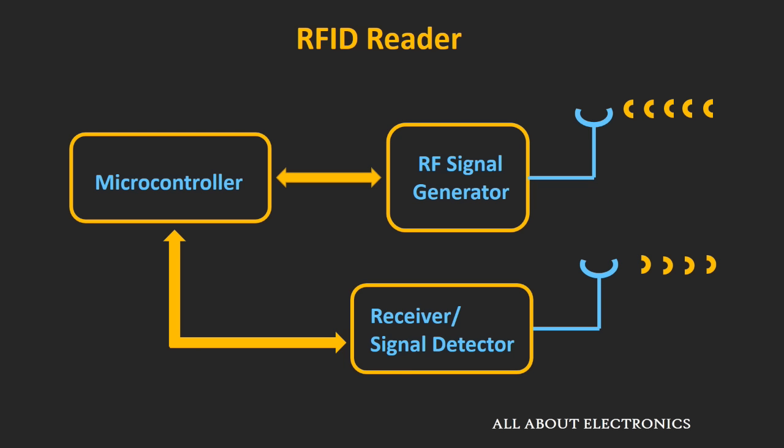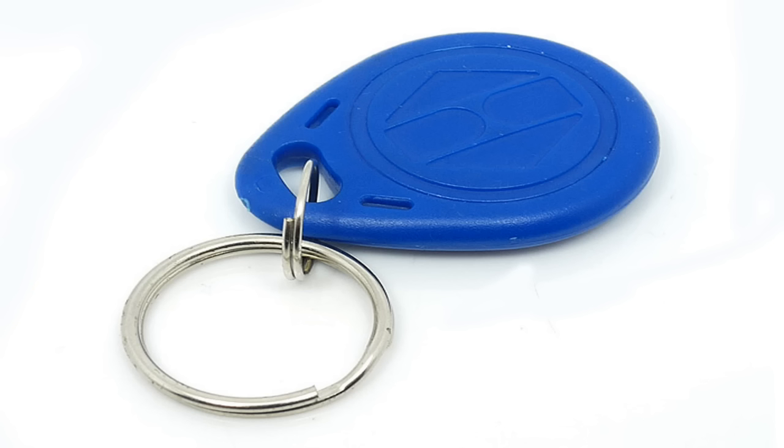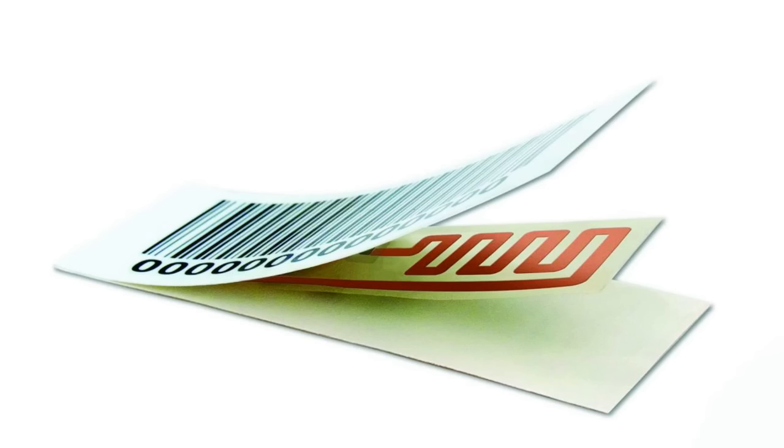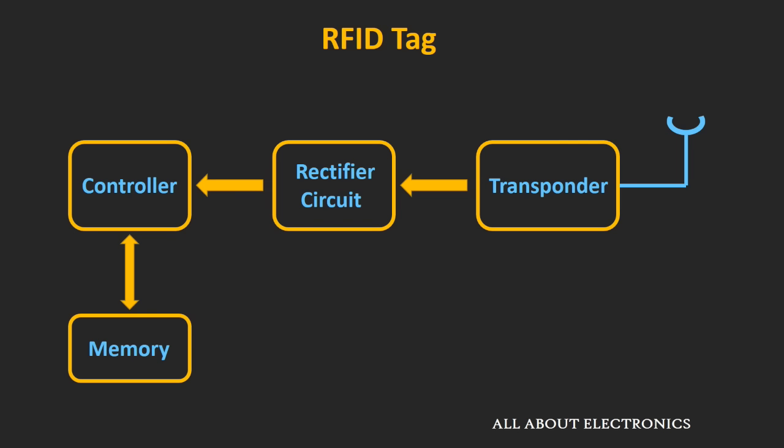Most tags used today are passive tags, because they are cheaper than active tags and require no power source, making them compact. Passive tags come in many forms — the size of a keychain, a credit card, or in the form of a label. Inside the RFID tag, the first component is a transponder, which receives radio waves from the reader and sends the feedback signal back. Since passive tags have no power supply, they get their energy from the incoming radio waves. A rectifier circuit stores this energy across a capacitor, which powers the controller and memory elements inside the tag.